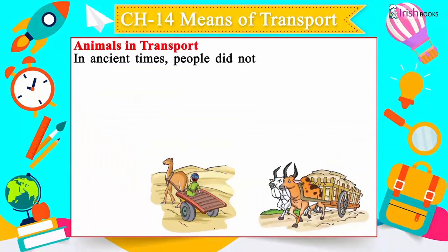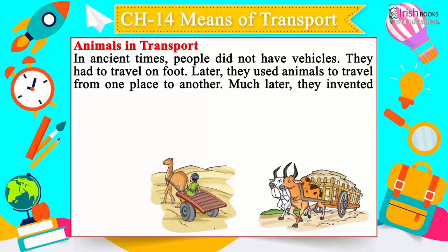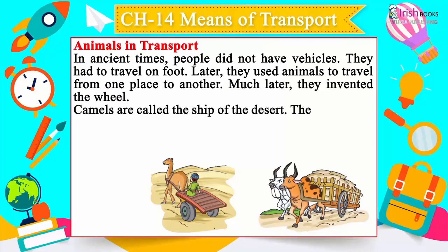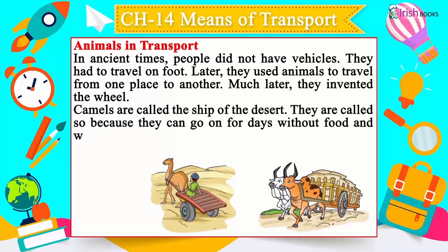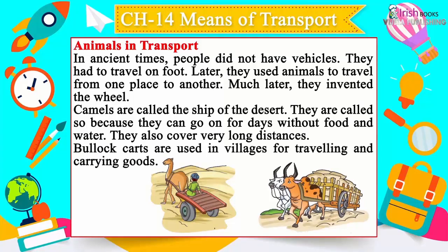Animals in Transport — In ancient times, people did not have vehicles and had to travel on foot. Later, they used animals to travel from one place to another. Much later, they invented the wheel. Camels are called the ship of the desert because they can go for days without food and water and cover very long distances. Bullock carts are used in villages for travelling and carrying goods.